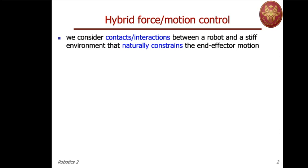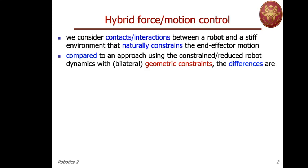When the robot is in contact with a very stiff environment — infinitely rigid in principle — it maintains contact so that there are natural constraints acting on the end effector motion, which may be considered as bilateral ones. So we cannot penetrate the environment with the end effector of the robot, but also we don't want to lose contact, because otherwise we would fall into a different category of control tasks.